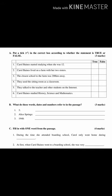First, put a tick in the correct box according to whether the statement is true or false. One: Carol Baines started studying when she was 12. Two: Carol Baines lived on a farm with her two sisters. Three: the closest school from the farm was 200 kilometers away. Four: they used the sitting room as a classroom. Five: they talked to the teacher and other students on the internet. Six: Carol Baines studied history, science and mathematics.